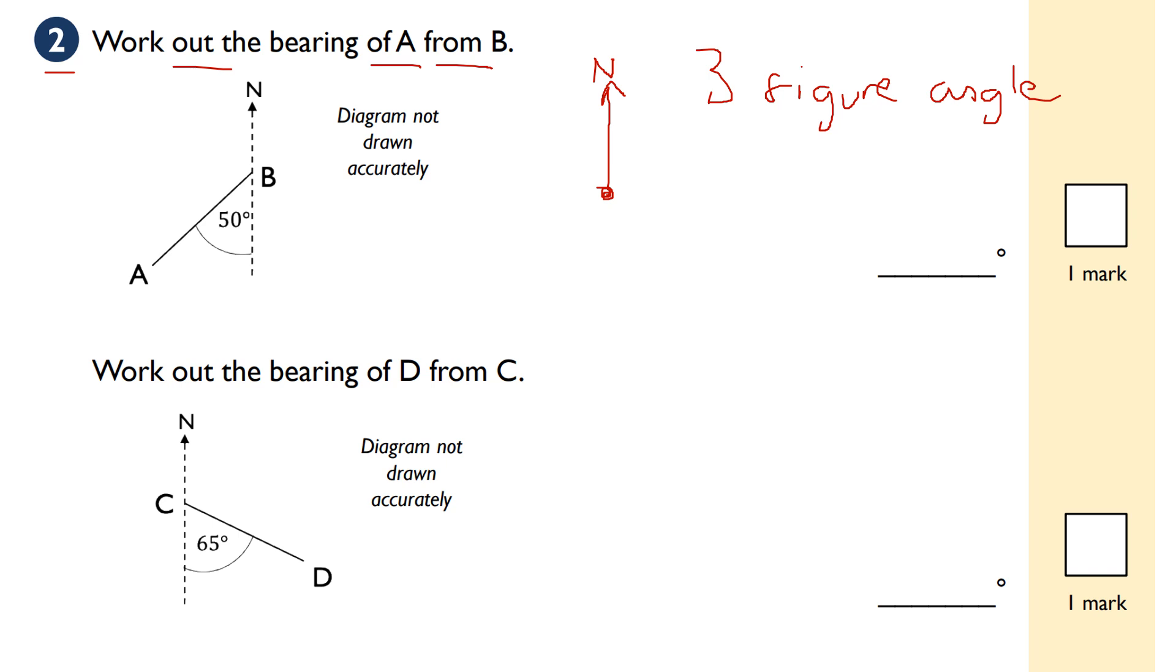When measuring from B, we start at B and look at A. It's this angle here - this angle plus this part here. We've got 50, and then this angle here equals 180 because it's a straight line. So 180 plus 50.